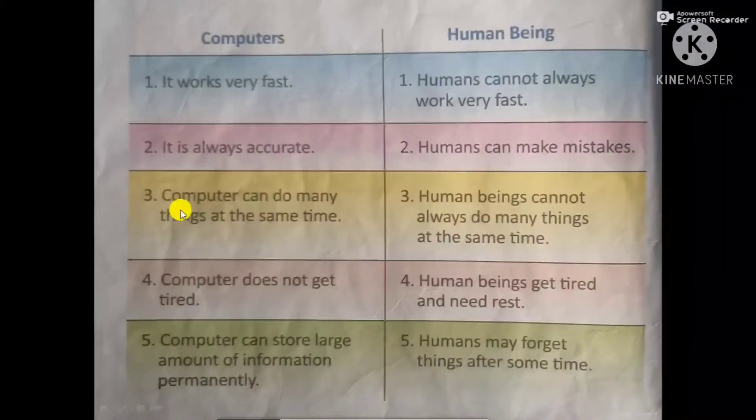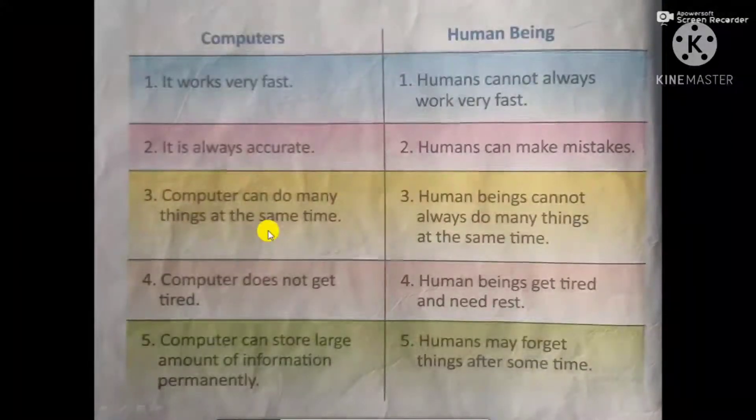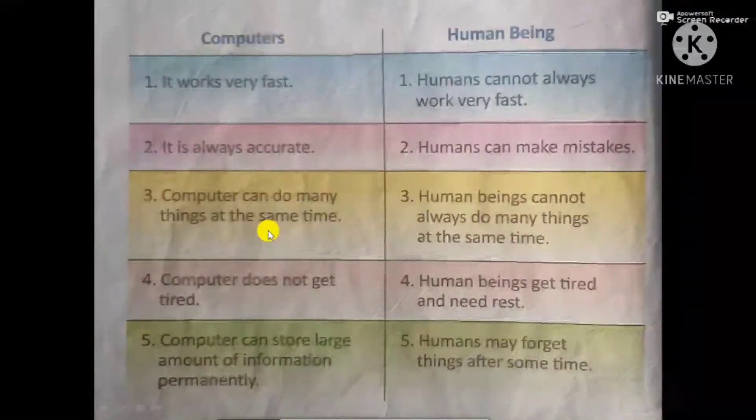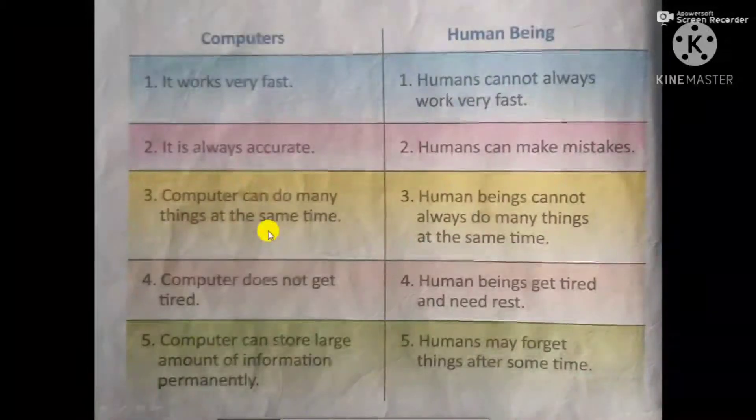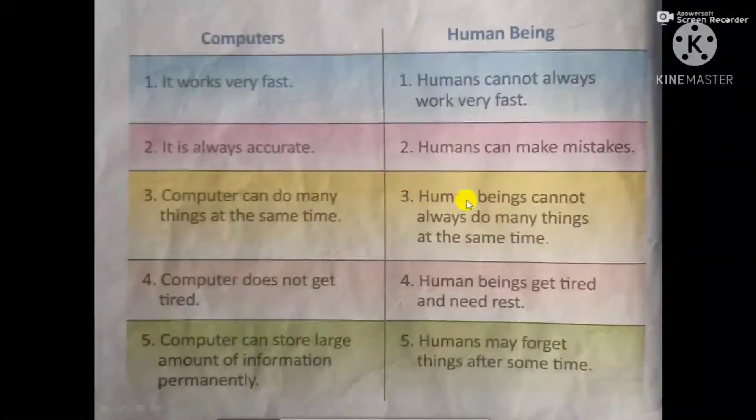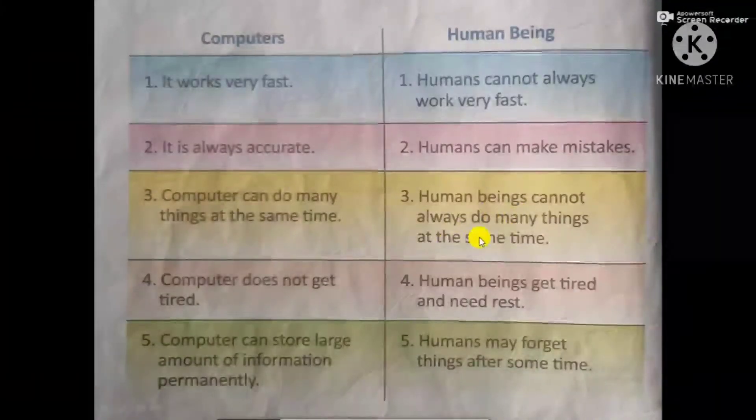Third, computer can do many things at the same time. But human beings cannot always do many things at the same time.